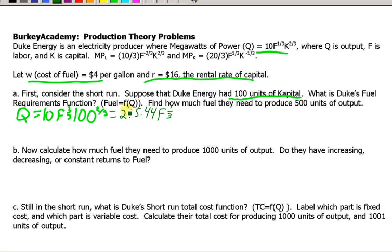Now, if you wanted to do what we could call a fuel requirements function, or sometimes a labor requirements function if that's your variable input, then what we were trying to do is solve 215.44 f to the one-third equals q for f. And what that will do is tell us how much fuel you need to get a certain amount of output. So, pause the video and see if you can do that.